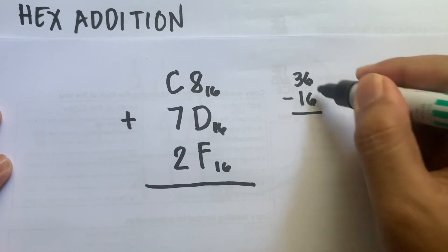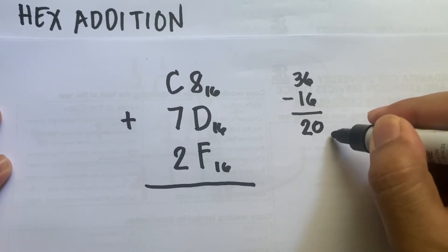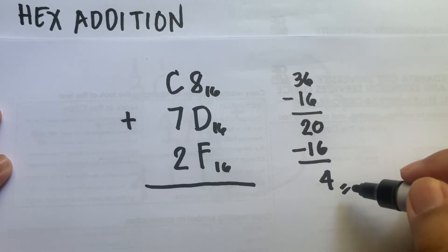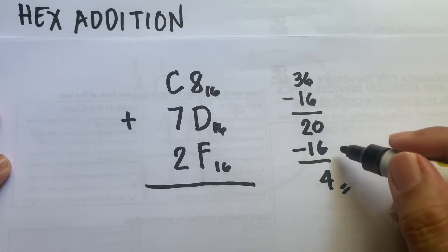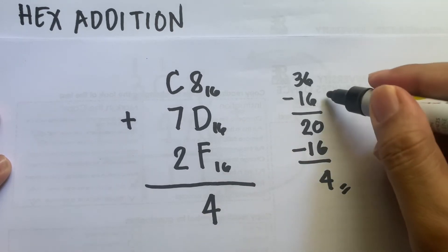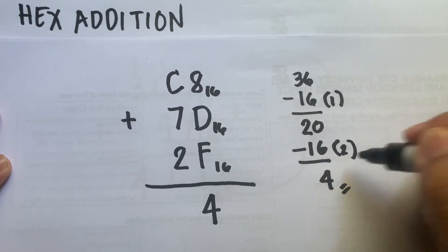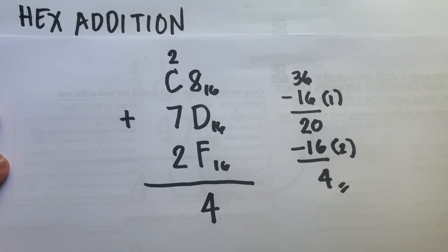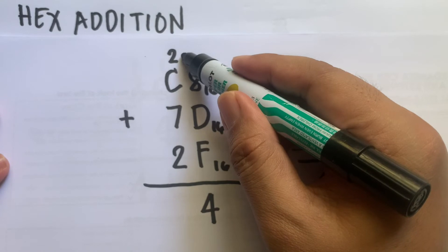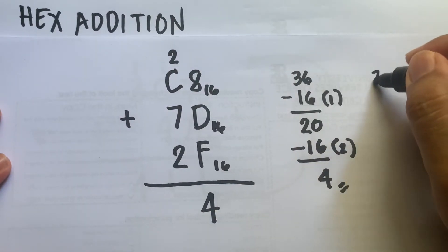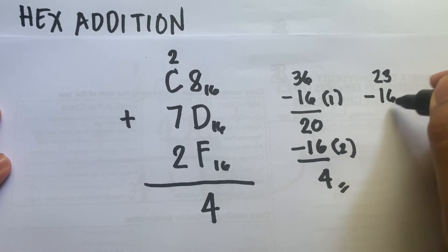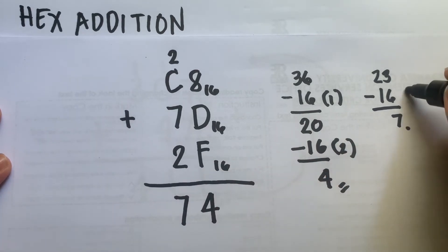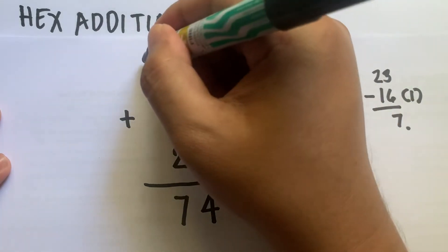36 minus 16 is 20, which is still invalid, so we subtract 16 again: 20 minus 16 is 4. So 4 is a valid hexadecimal number and we stop subtracting. We put 4 here. Since we subtracted 16 twice, we carry 2. Then 2 plus C is 12 plus 2 equals 14, plus 7 is 21. 21 is invalid, so we subtract 16: 21 minus 16 is 7, which is valid. We put 7 here and carry 1. Then we bring down 1, giving the answer 1, 7, 4.